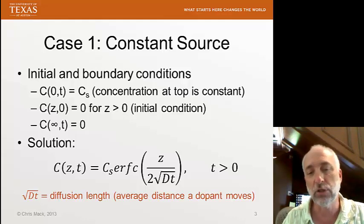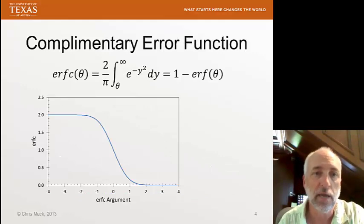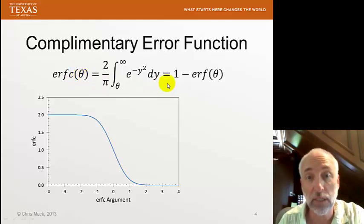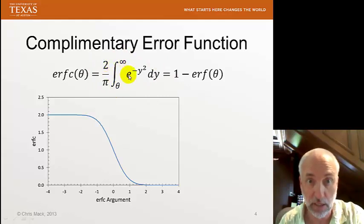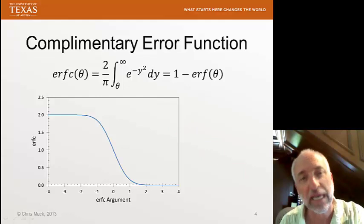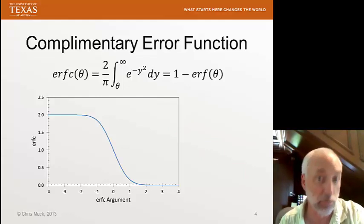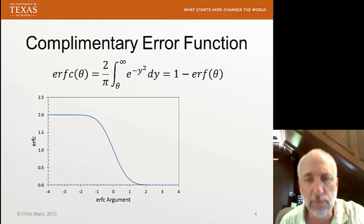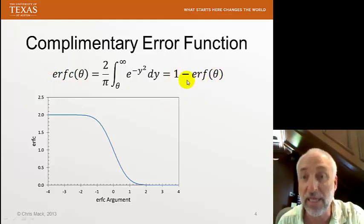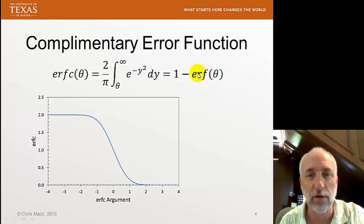Let's look at what the complementary error function is all about. It is defined by this integral: 2 over the square root of pi times the integral from theta to infinity of e to the minus y squared dy. That's really the integral of a Gaussian — if you integrate a Gaussian over its argument, you get an error function or complementary error function. The complementary error function is simply 1 minus the error function. That's why we call it complementary. Whether you have the error function or the complementary error function, it's easy to get the other one just by doing this 1 minus operation.